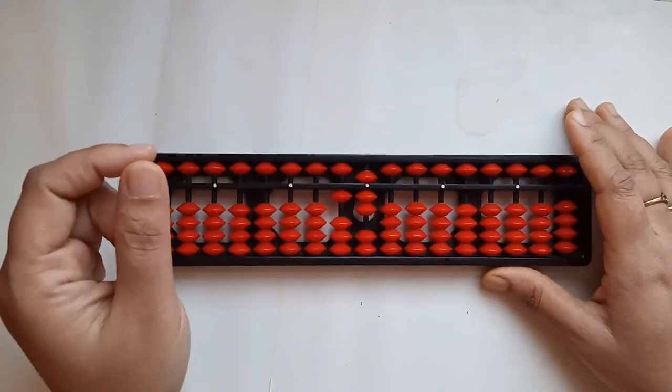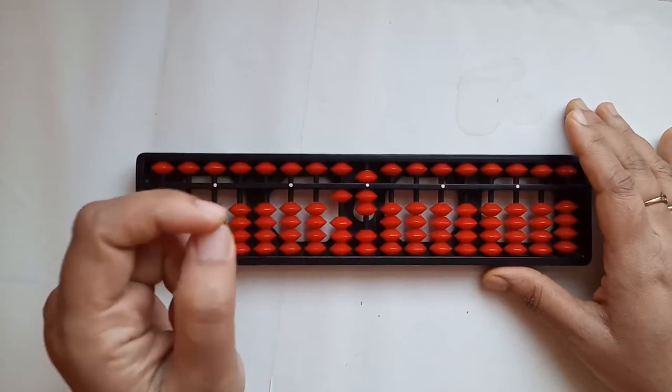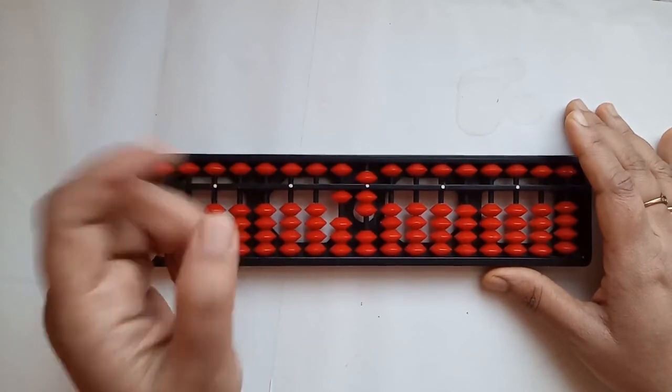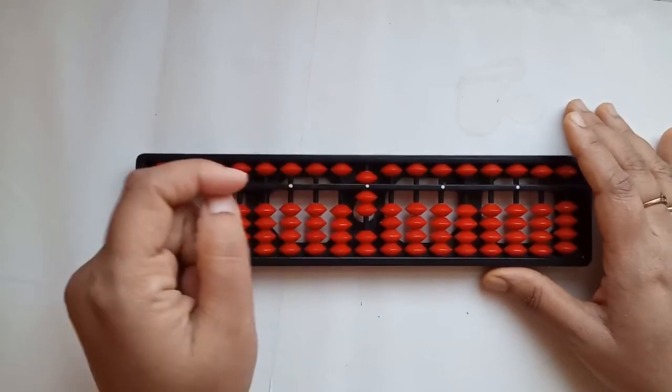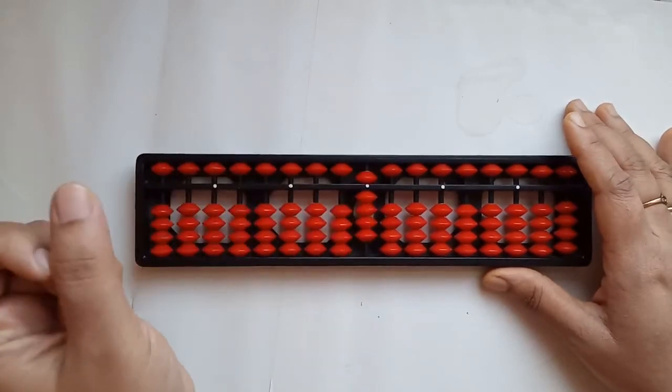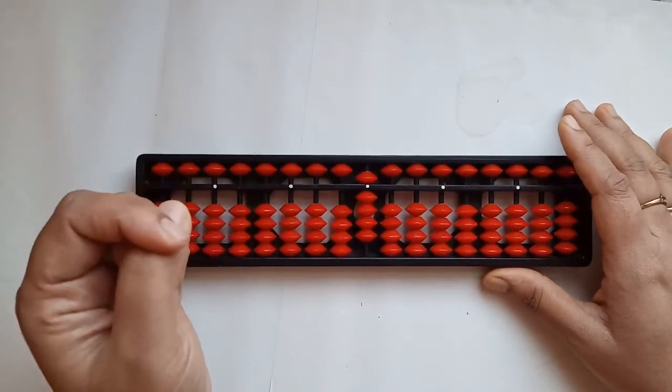Now, we can't do minus 8 directly. So, we are going to use 8's tens complement. That is 2. So, we subtract 10 and add 2. We got 9.